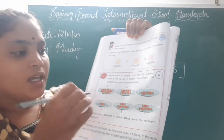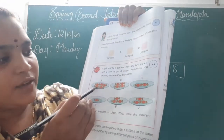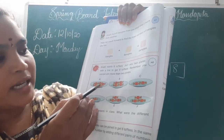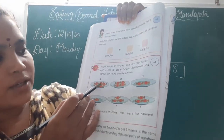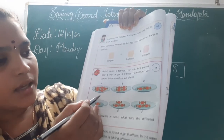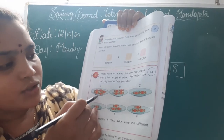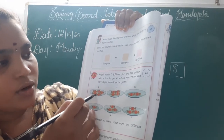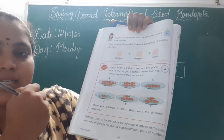You have to check. For example, if you join here, how many chocolates? 1, 2, 3, 4, 5. So you have to join these 2 to get 6 chocolates.